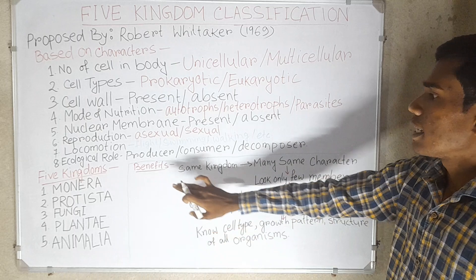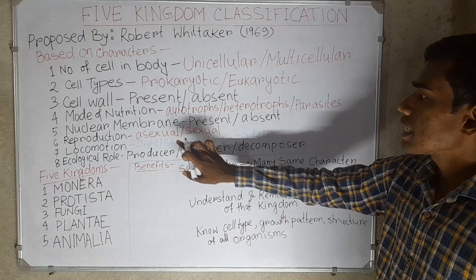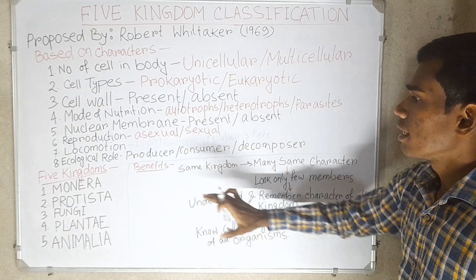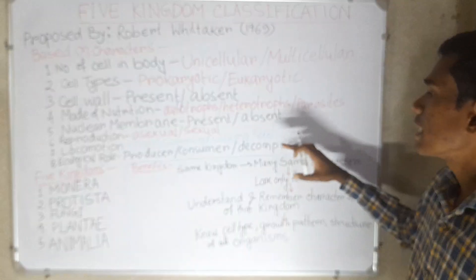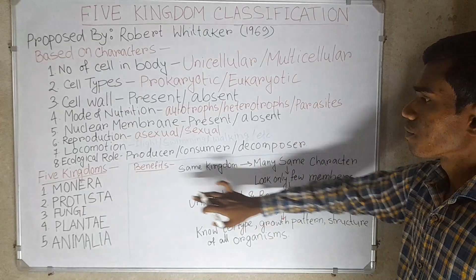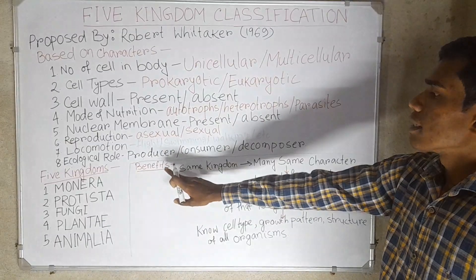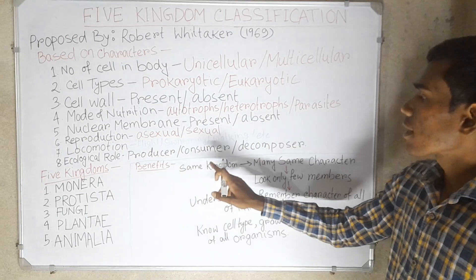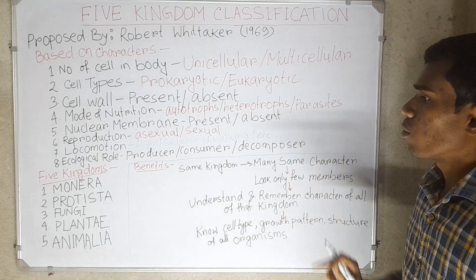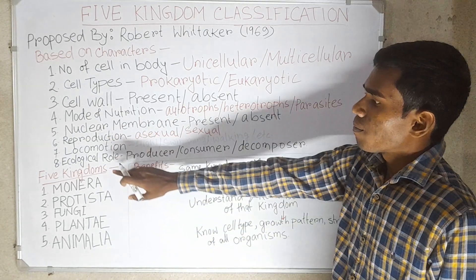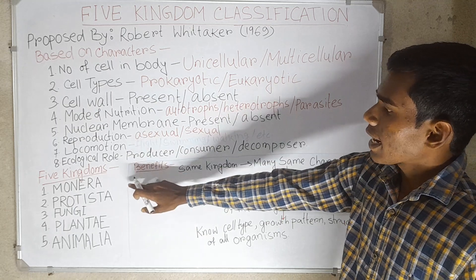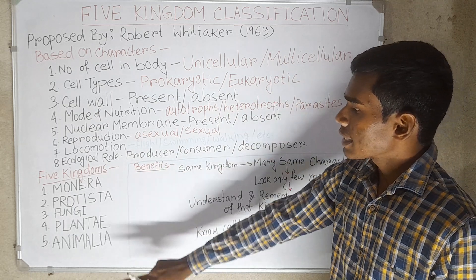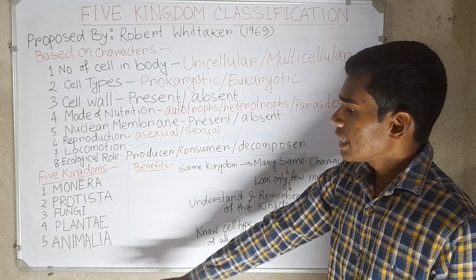Other characters include reproduction — whether it is asexual or sexual — locomotion, such as flight, swimming, or walking, and ecological role — whether the organism is a producer, consumer, or decomposer. The five kingdoms given by Robert Whittaker are Monera, Protista, Fungi, Plantae, and Animalia.